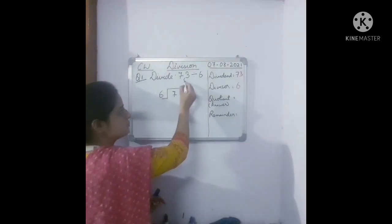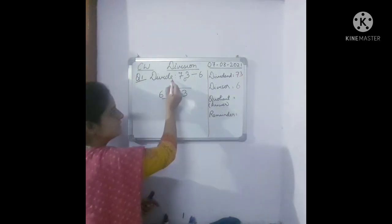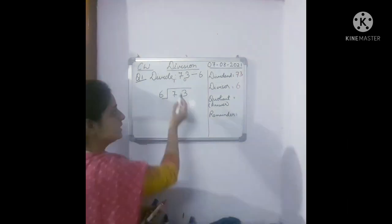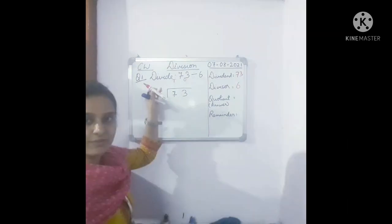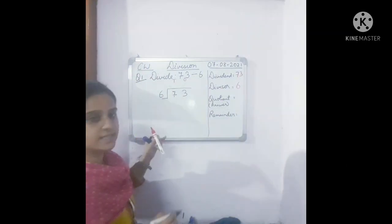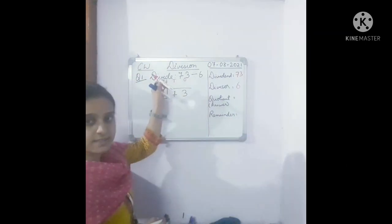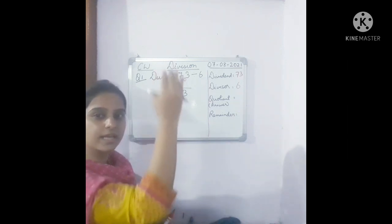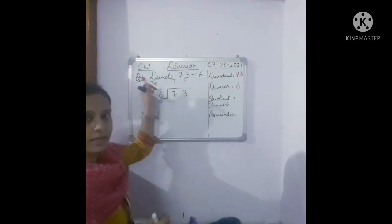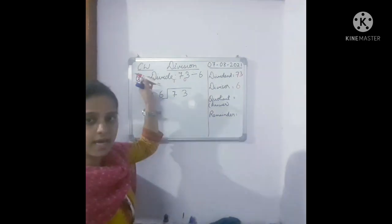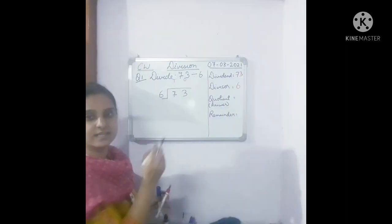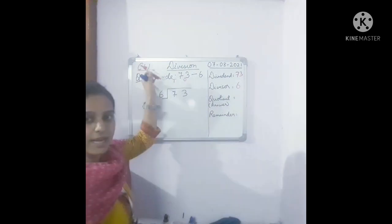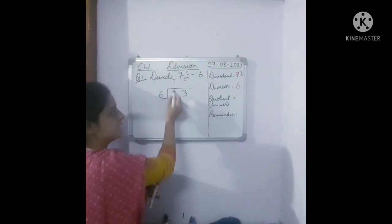Children, this 3 is in the ones place and 7 is in the tens place. When we do division, we start from our left side. On our left side is the tens place. Generally we start multiplication, addition, and subtraction from the ones place. But division starts from the left side — whichever place is there: hundreds, tens, whatever place. So here on my left side, which place is there? Tens. So first we are going to divide 7.